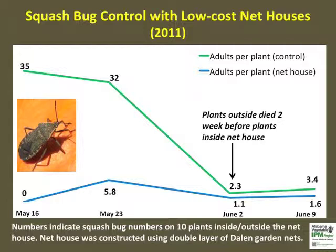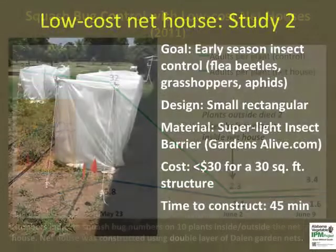Reduction in adult squash bug numbers also meant a reduced number of eggs per plant over three weeks.